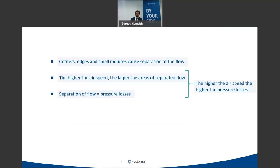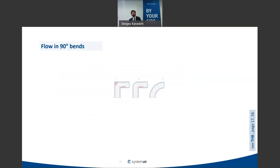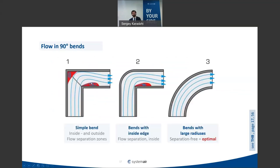For example, a 90-degree bend made without any radius creates separation in two places. A bend with radius only on the outer part and no inner radius still causes separation. If a fan is installed near such a bend, it will have significant problems. It's always better to use proper radii with low losses, so the fan doesn't need to compensate for additional pressure.